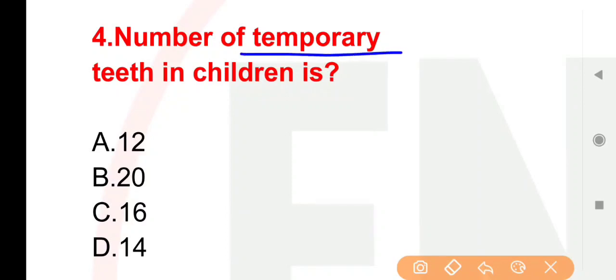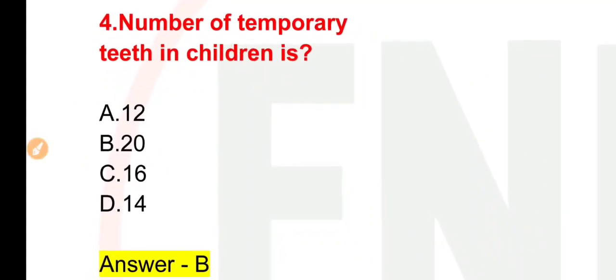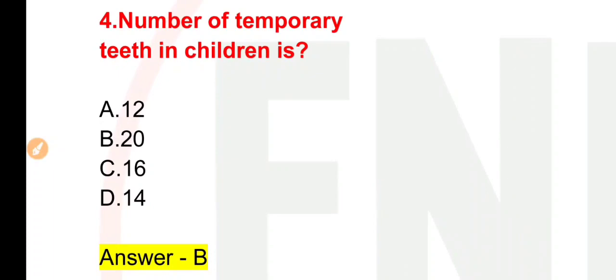Next question: Number of temporary teeth in children is — bacchon mein paaye jaane wale temporary teeth, jinhe aap Hindi mein 'doodh ke daant' kehte hain, kitni sankhya mein hote hain? Options: 12, 20, 16, 14. The right answer is option B — 20.